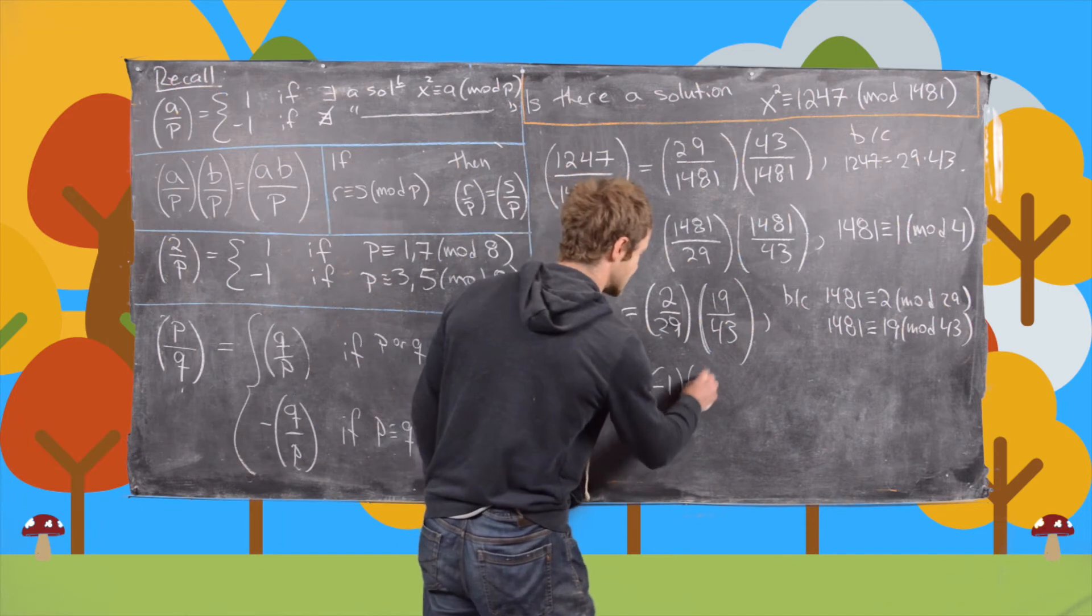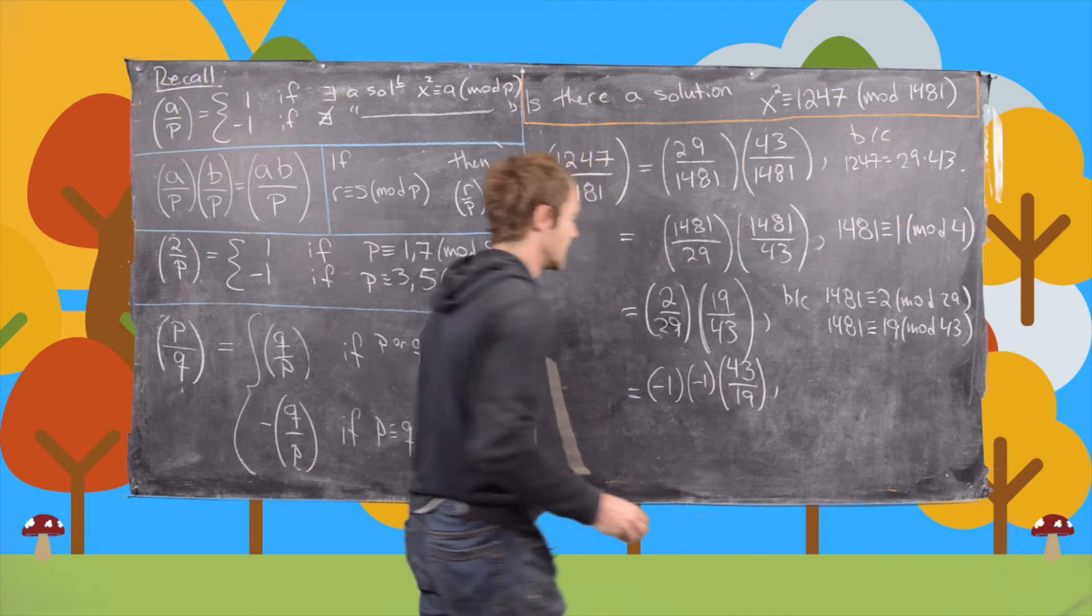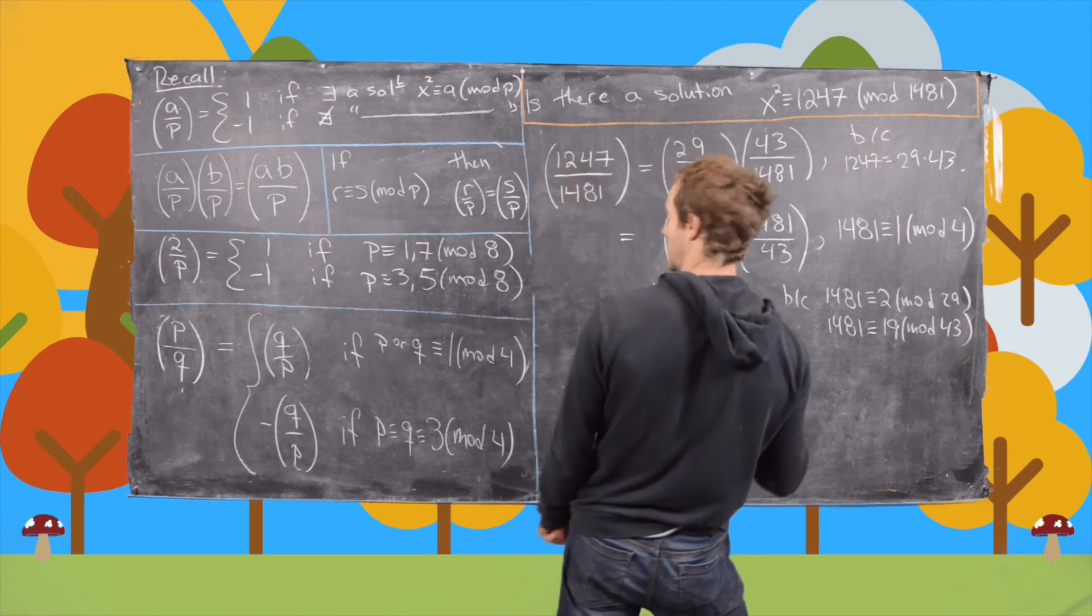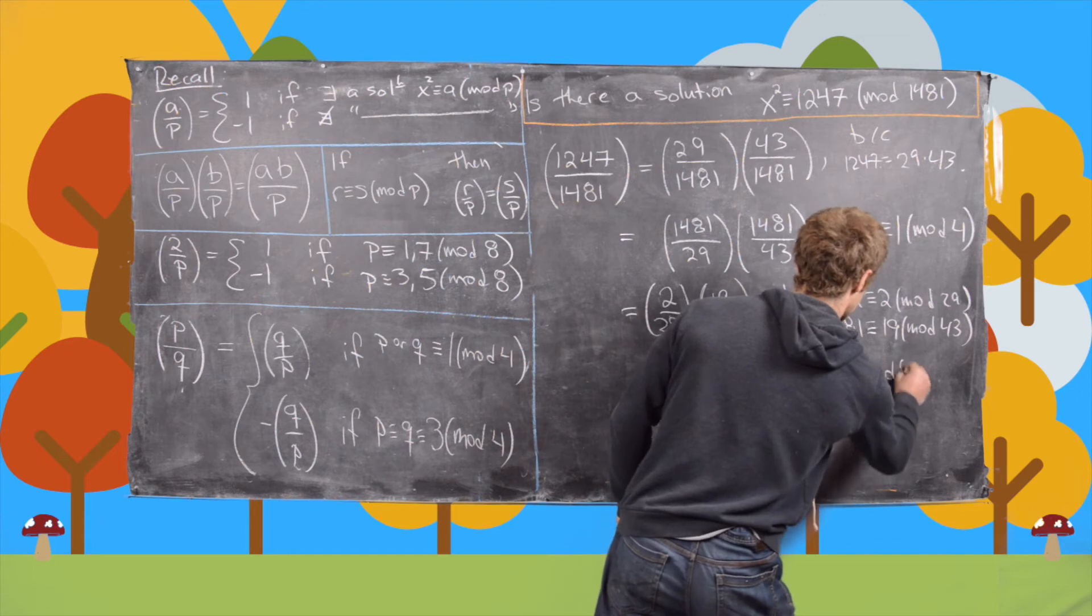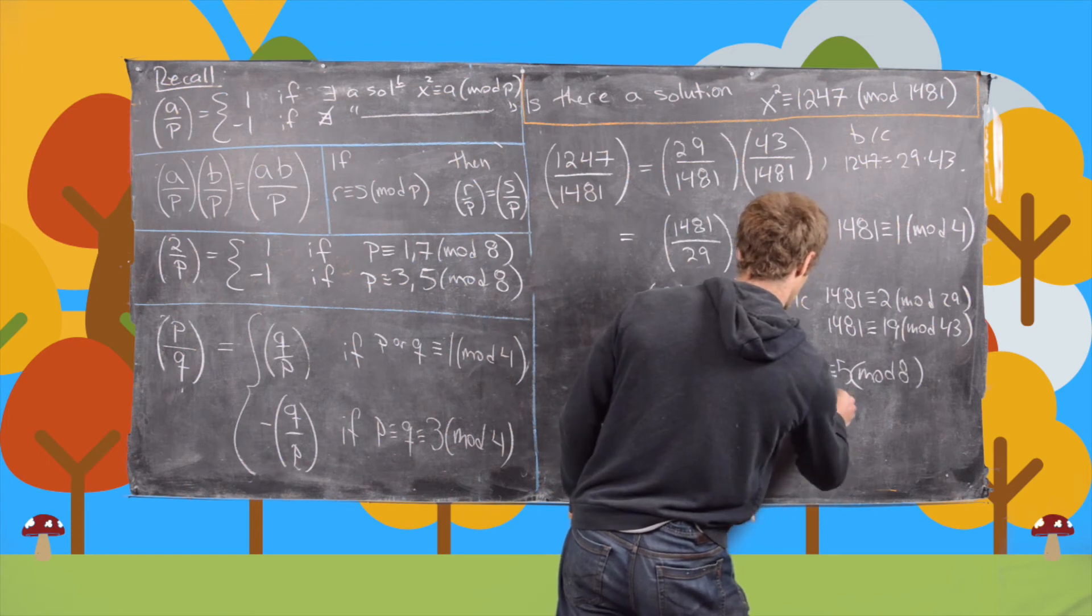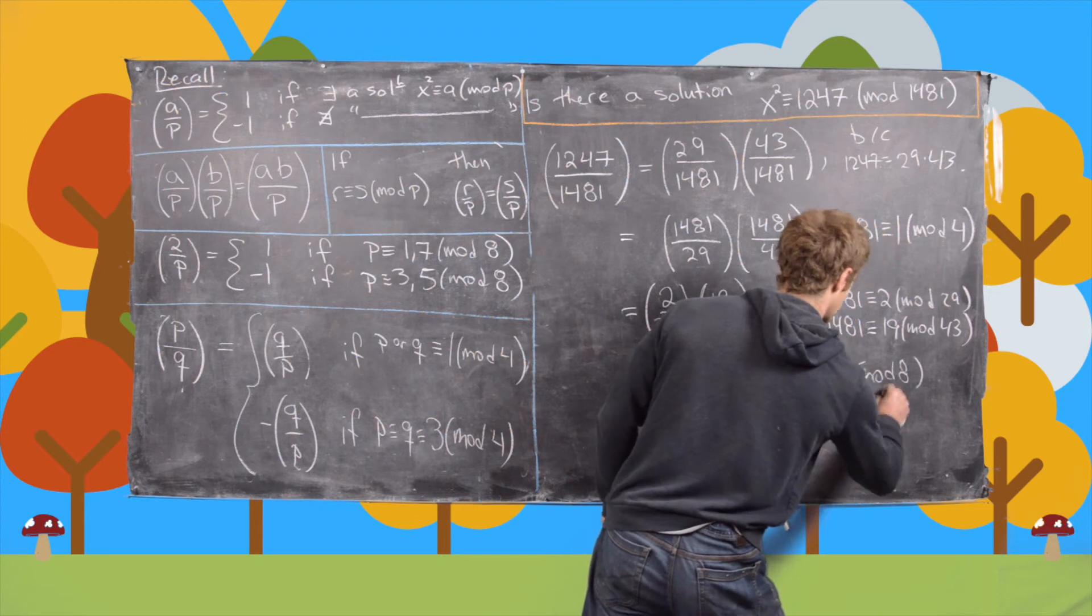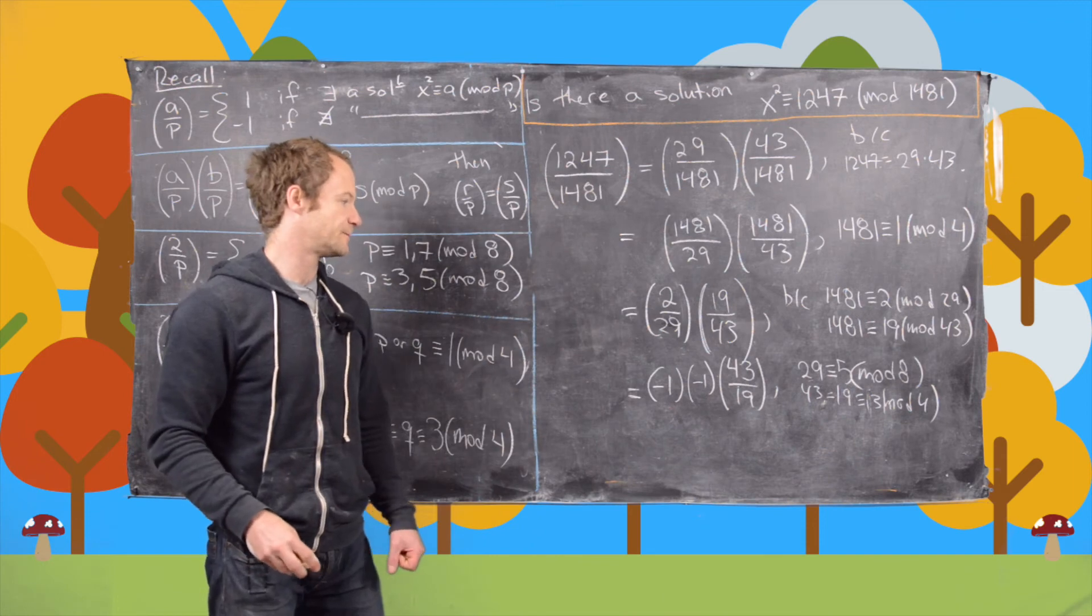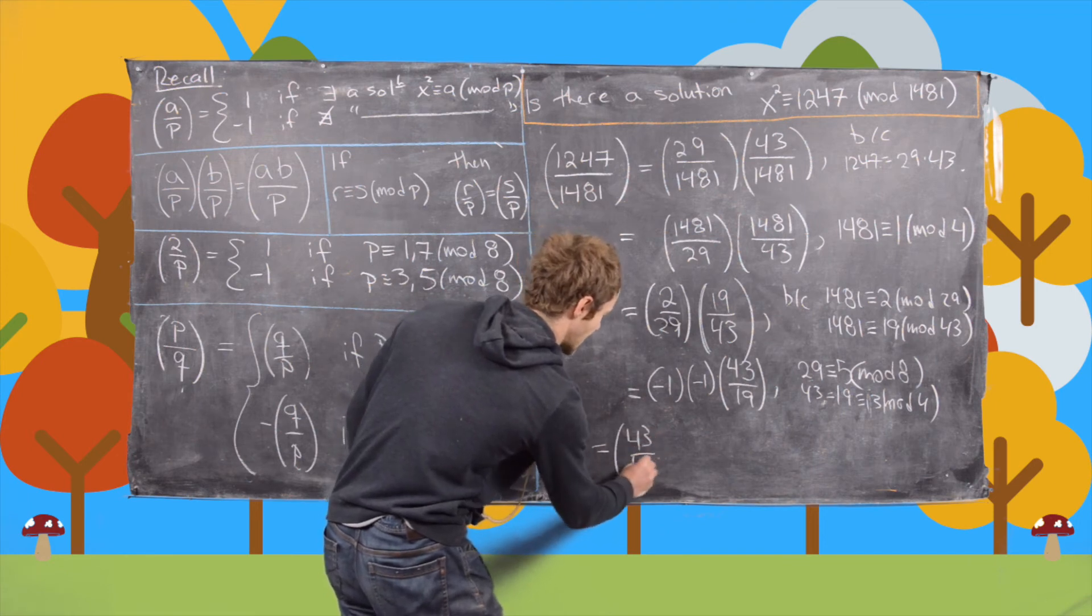And then we're also going to get a minus sign after flipping this to 43 by 19. So we get both of those minus signs for two different reasons. So one of them we get because 29 is congruent to 5 mod 8. And then the other one we get because 43 is congruent to 19 which is congruent to 3 mod 4. So we pick up two minus signs there. So notice those are going to obviously cancel and that'll give us 43 by 19.